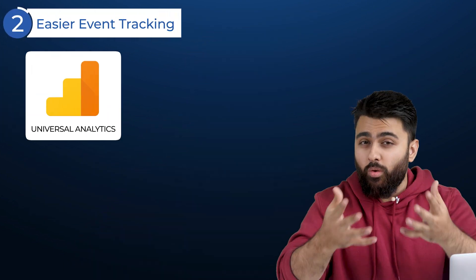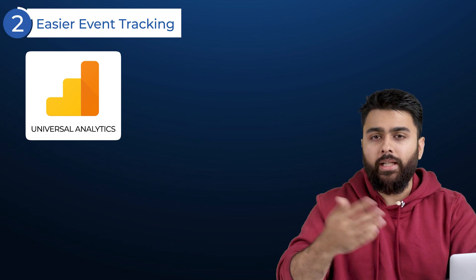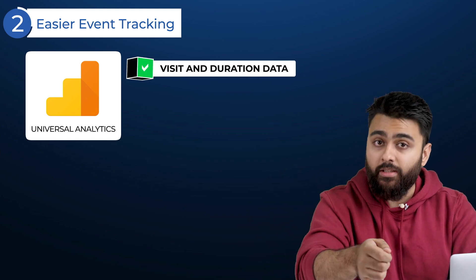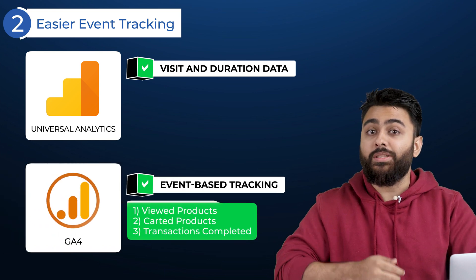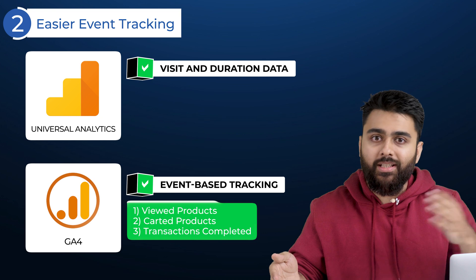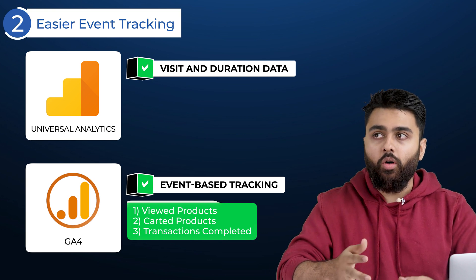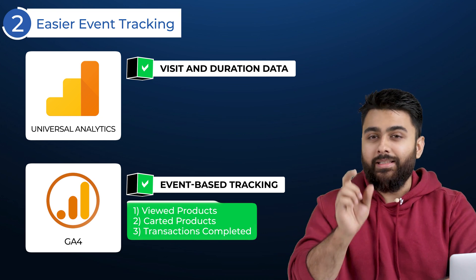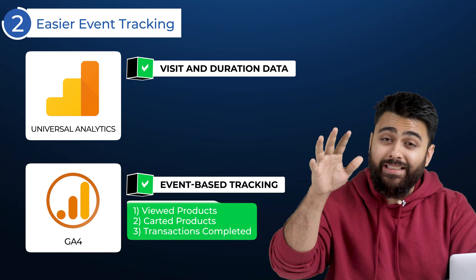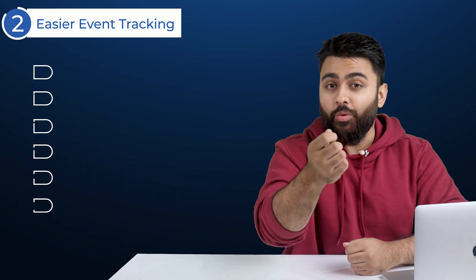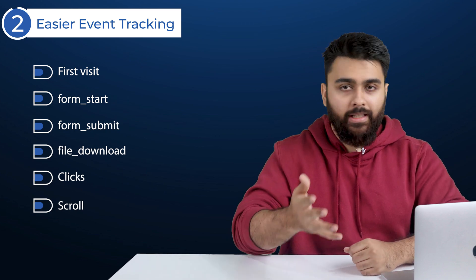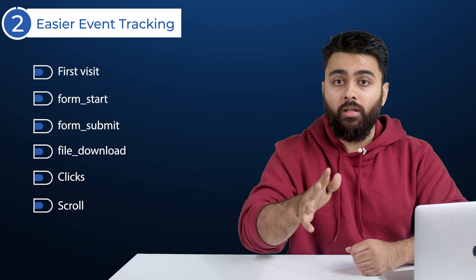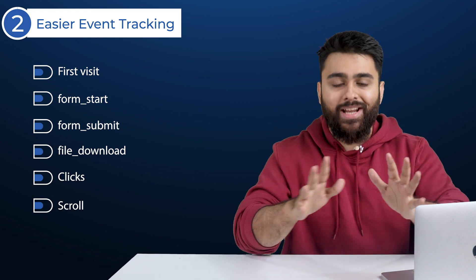Second: Easier Event Tracking with New Metrics. In the older version, the UA assistant would tell you how many times a customer visited your store and how long they stayed. But with GA4, the assistant can tell you what the customer did in your store — like which products they looked at, if they added anything to their cart, or even if they completed a purchase. This event-based tracking gives you a deeper understanding of your customer's journey. To be fair, you could also do event tracking in UA, but it was difficult for beginners to set up, whereas in GA4 it's set up right out of the box.